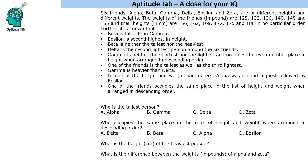This set is based on arrangement. There are six friends: Alpha, Beta, Gamma, Delta, Epsilon, and Zeta. They have different heights and different weights. Their heights and weights are given in pounds and centimeters. Some conditions are given about these people. Before we solve this, just look at the conditions.